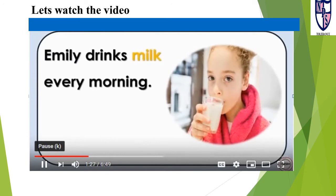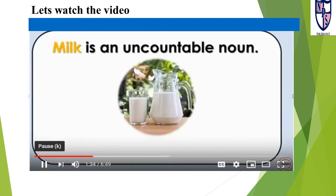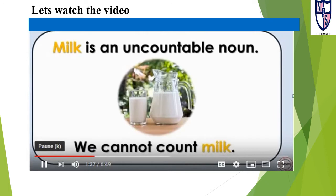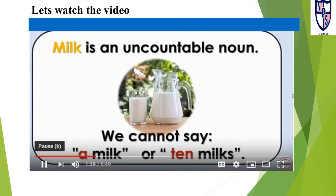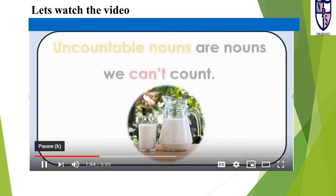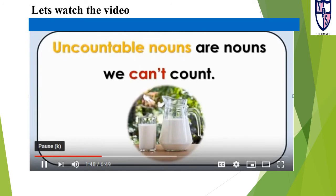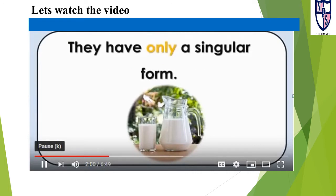Emily drinks milk every morning. She likes milk. Milk is an uncountable noun — we cannot count milk. We cannot say a milk or ten milks. Uncountable nouns are nouns we can't count. They are also called non-countable nouns, non-count nouns, and mass nouns. They have only a singular form.